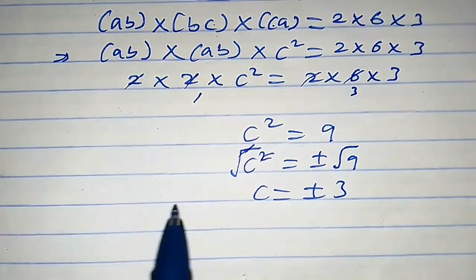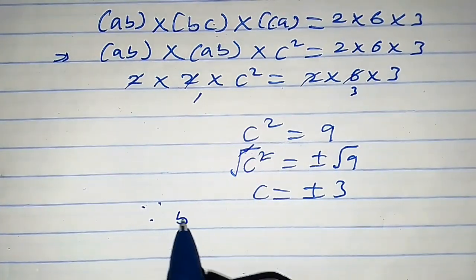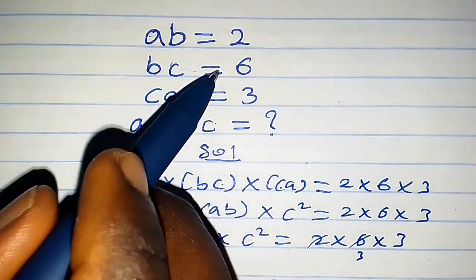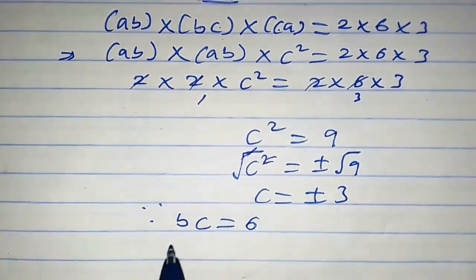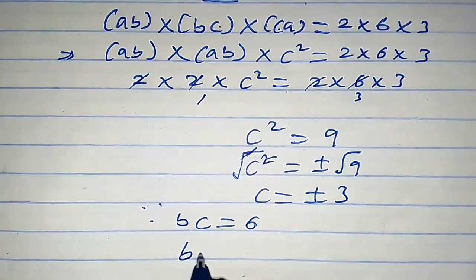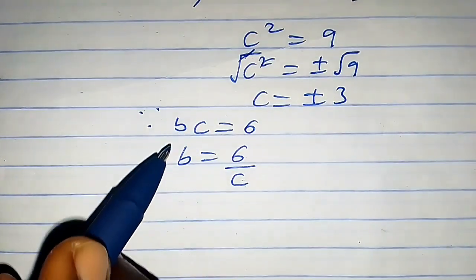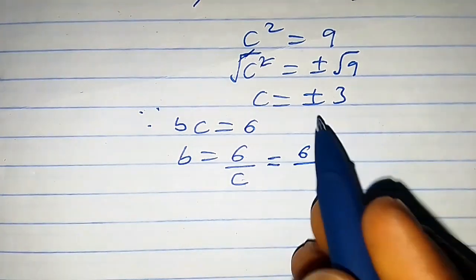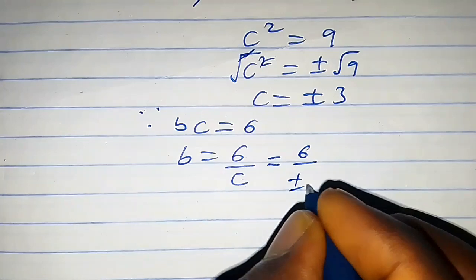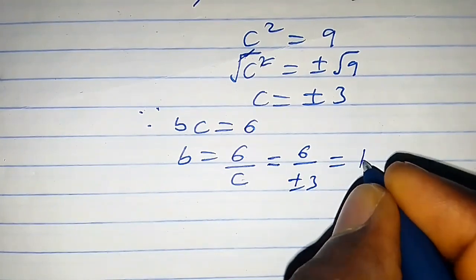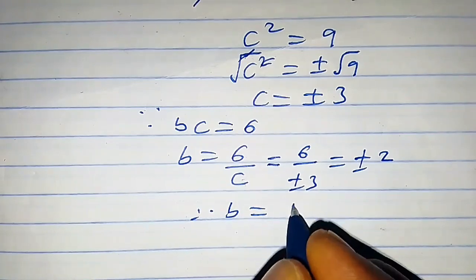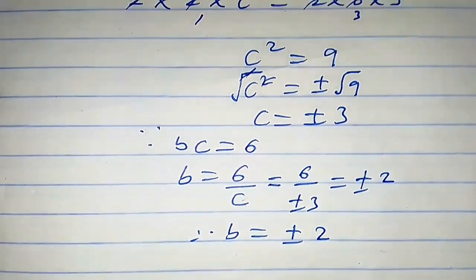Since bc equals 6, we can write b equals 6 over c. Substituting c equals plus or minus 3 gives b equals 6 over plus or minus 3, so b equals plus or minus 2.